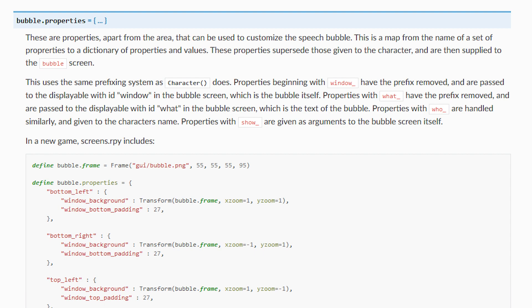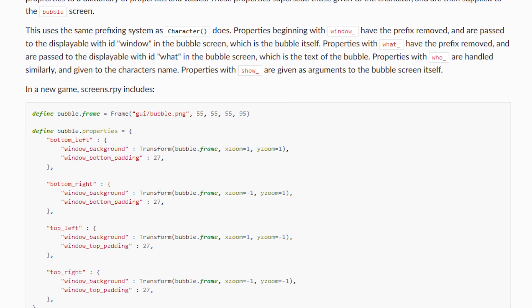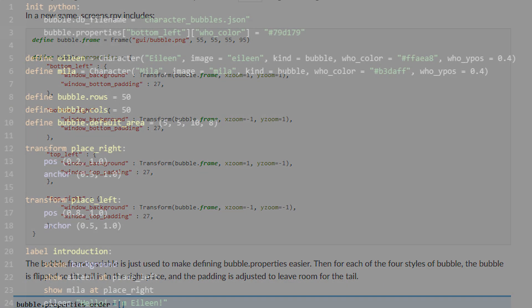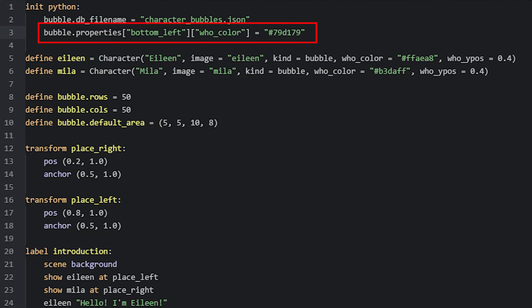For that, we have a variable called bubble.properties, that is by default set to a dictionary containing key and value pairs for each type of bubble. And the different types of bubbles are based on where the tails are located. To change the looks of a bubble with a bottom left tail, for example, you can change it by accessing it in a dictionary and adjust its properties.